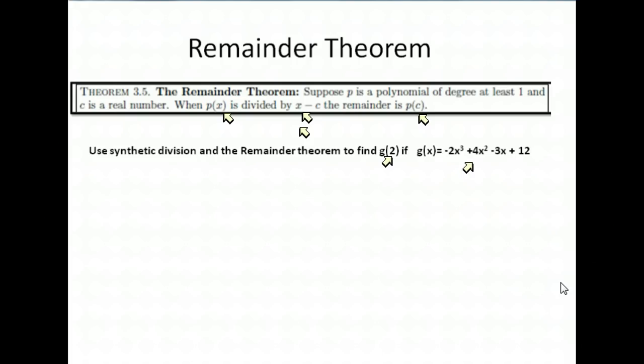So it says, when p of x, or when negative 2x to the third plus 4x squared minus 3x plus 12 is divided by x minus c, or in this case, our c was 2. So we're going to divide that by x minus 2. The remainder of that would be the same as plugging 2 into that function, or g of 2. Let's check to see if that's true. Let's find g of 2 our normal way, which means we just plug 2 in for x everywhere. And then we'll check to see if synthetic division gives us the same answer. So if we plug 2 into that, here's what we have.